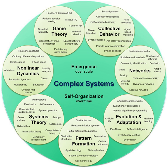As a field of study, complex systems is a subset of systems theory. General systems theory focuses similarly on the collective behaviors of interacting entities, but it studies a much broader class of systems, including non-complex systems where traditional reductionist approaches may remain viable. Systems theory seeks to explore and describe all classes of systems. As it relates to complex systems, systems theory contributes an emphasis on the way relationships and dependencies between a system's parts can determine system-wide properties. It also contributes the interdisciplinary perspective that shared properties link systems across disciplines, justifying the pursuit of modeling approaches applicable to complex systems wherever they appear.